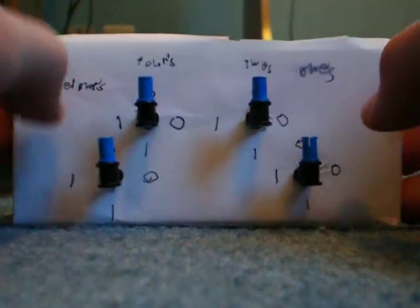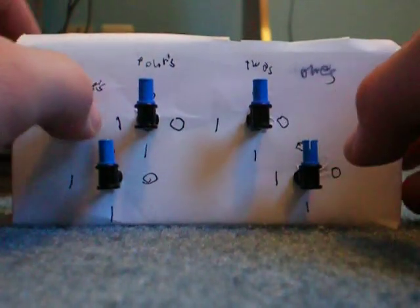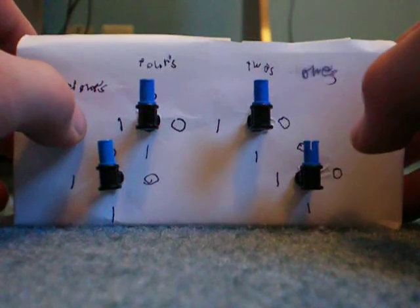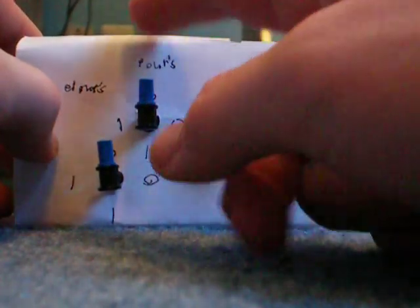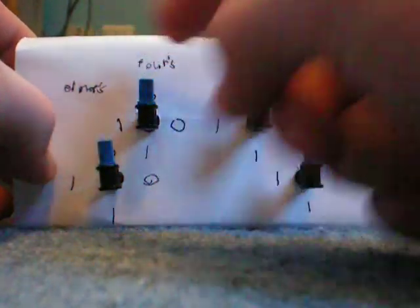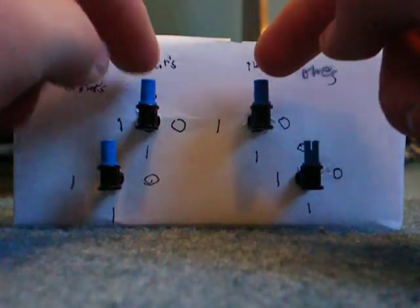We have a ones column, a twos column, a fours column, and an eights column. Each one bit could either be set to a one or a zero.